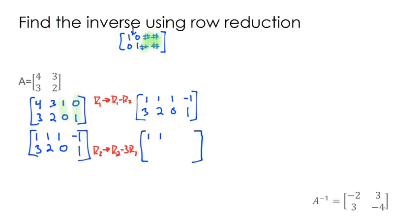I'm just going to copy my first row because we're not doing anything to it, but I'm taking my second row and subtracting 3 times the first row. So 3 minus 1 times 3 is 0, 2 minus 3 times 1 is negative 1, 0 minus 3 times 1 is negative 3, and 1 minus 3 times negative 1... 3 times negative 1 is negative 3, so 1 minus negative 3 would be positive 4.